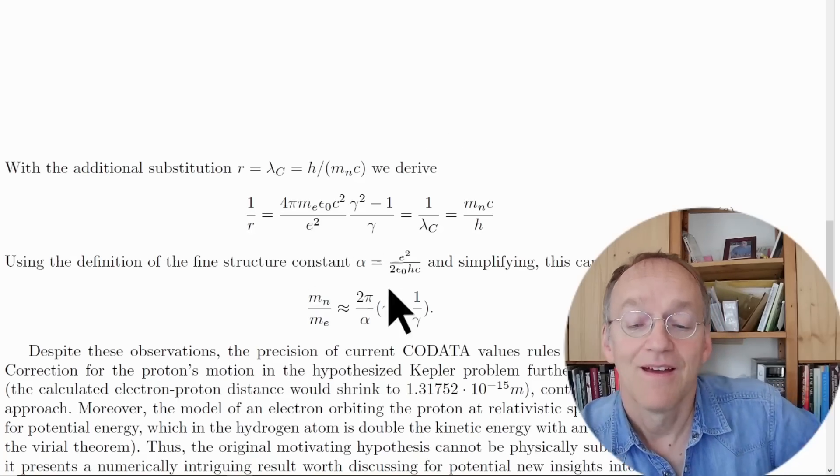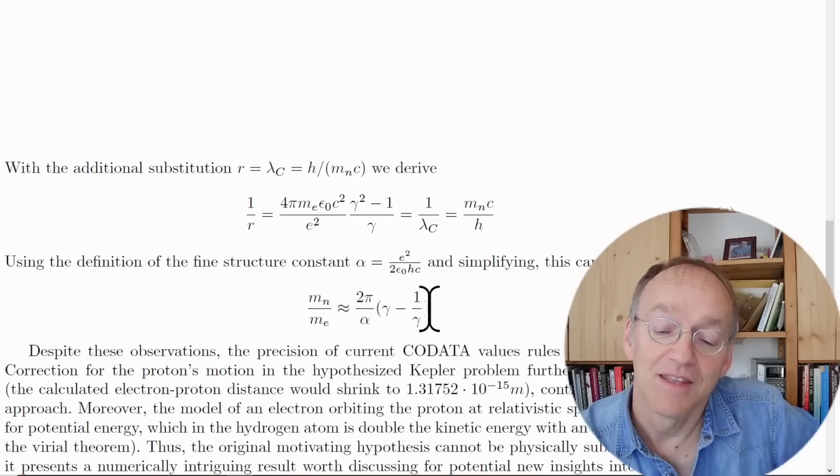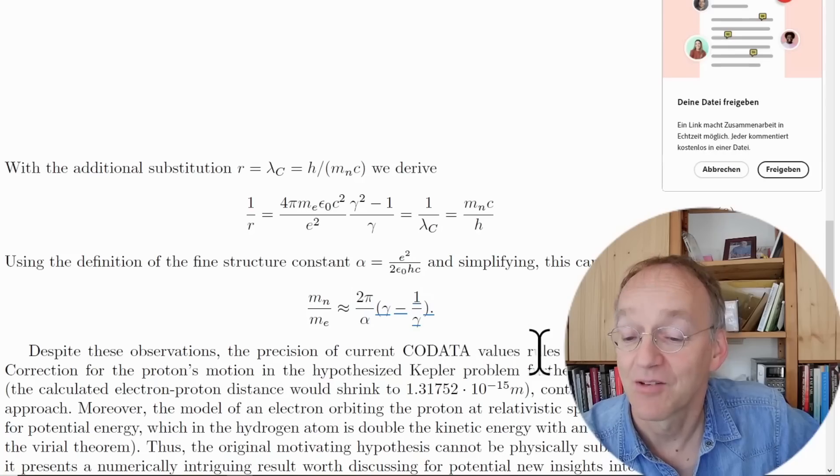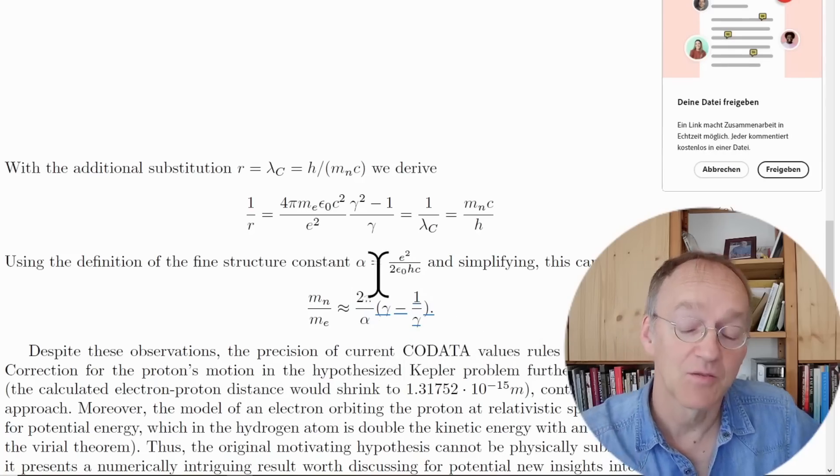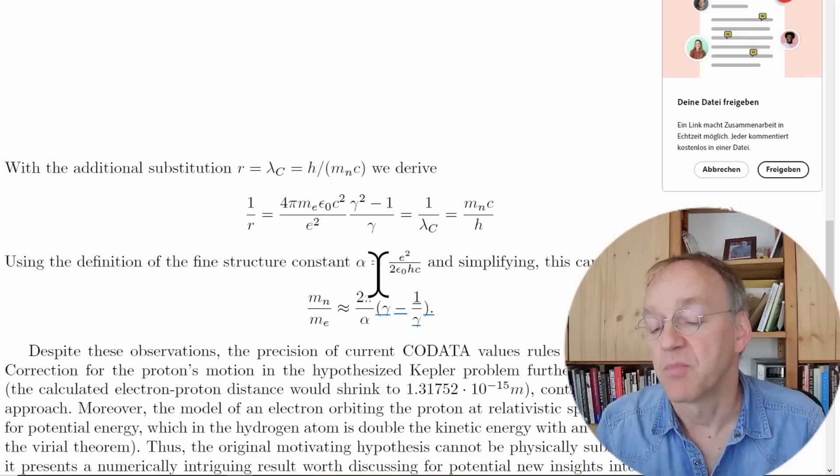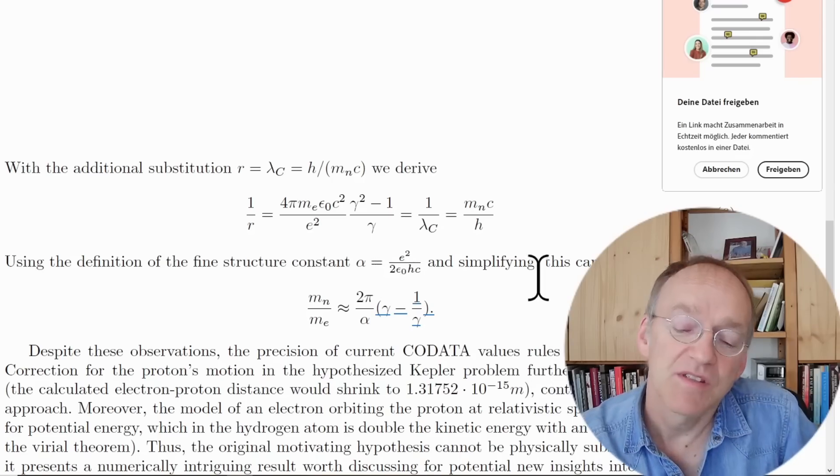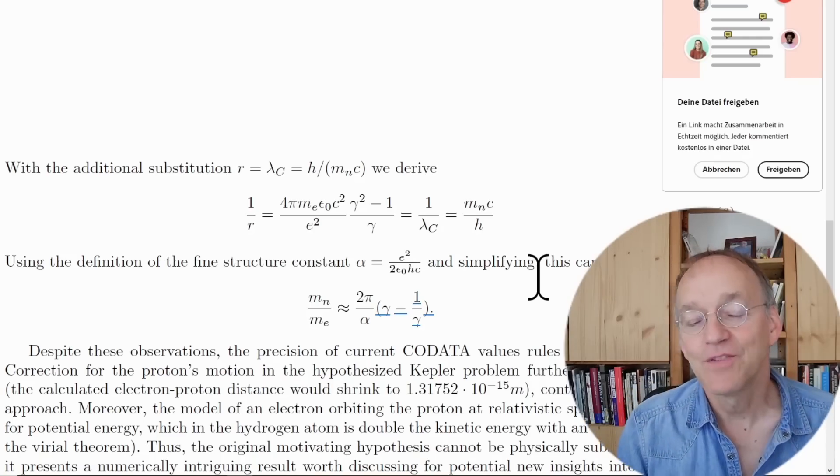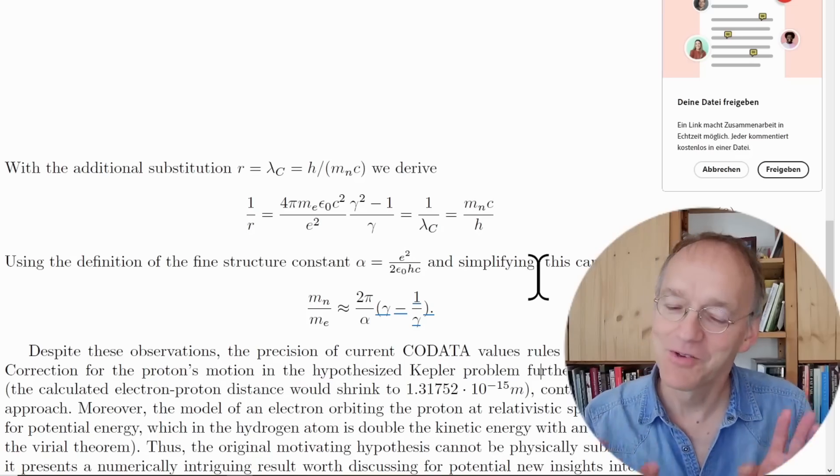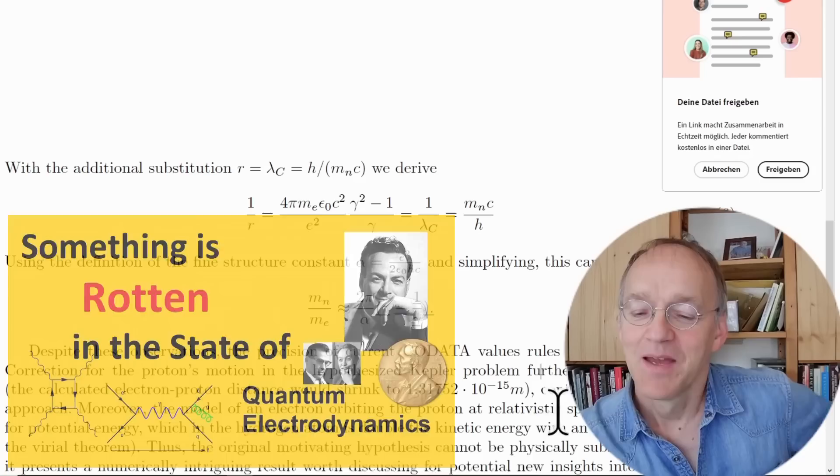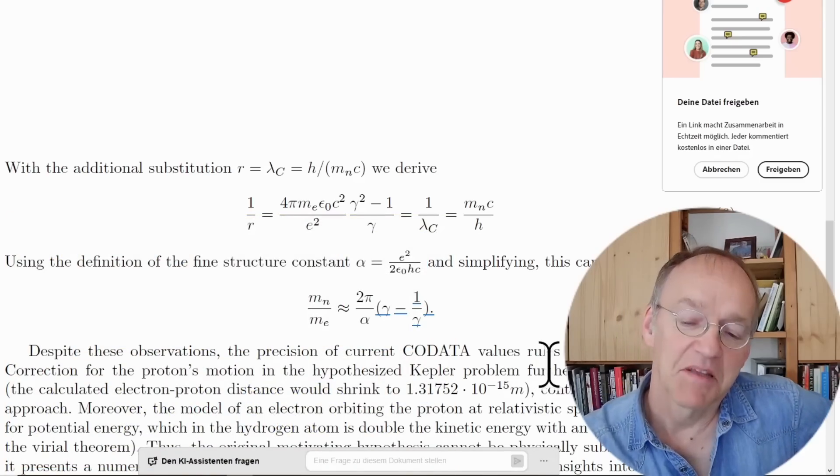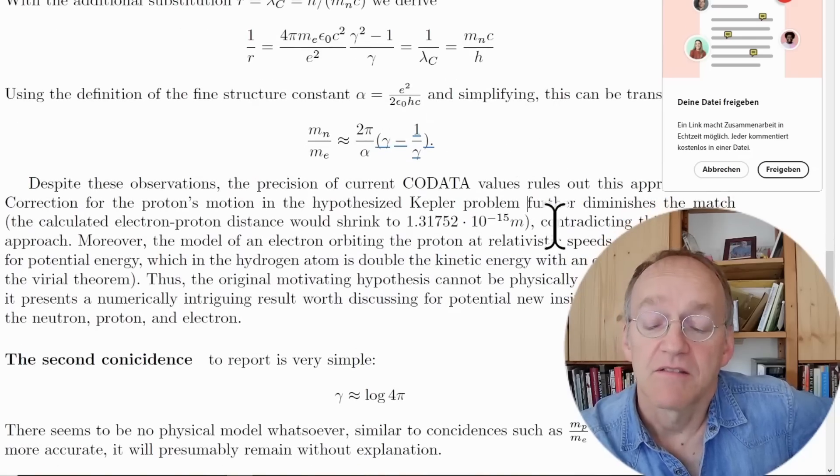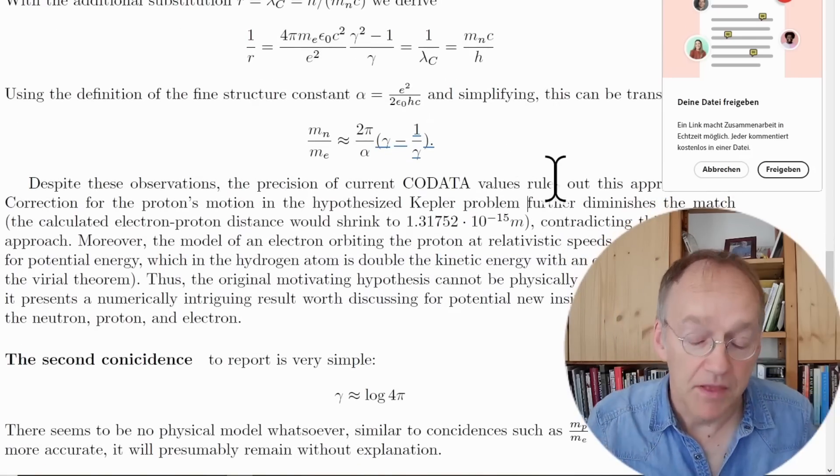You end up with the ratio of the neutron and electron mass as 2 pi over alpha, and then you have this weird combination of gamma, not gamma directly unfortunately, but gamma minus 1 over gamma, approximately 2.13. What's to note is that 2 pi over alpha is very common in quantum electrodynamics, something that could resemble a physical meaning, even if the rest is not very transparent.